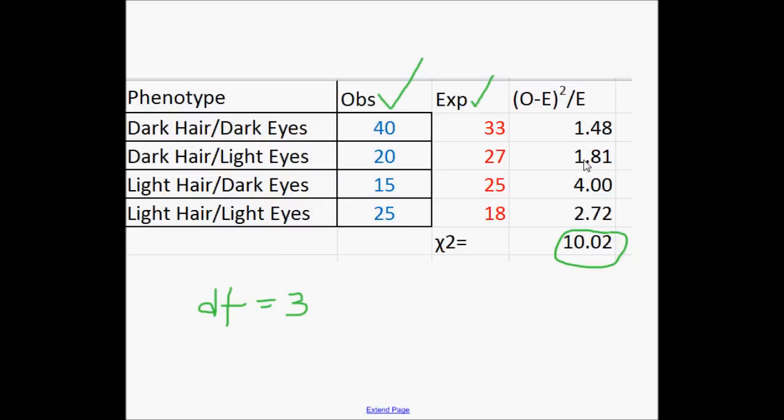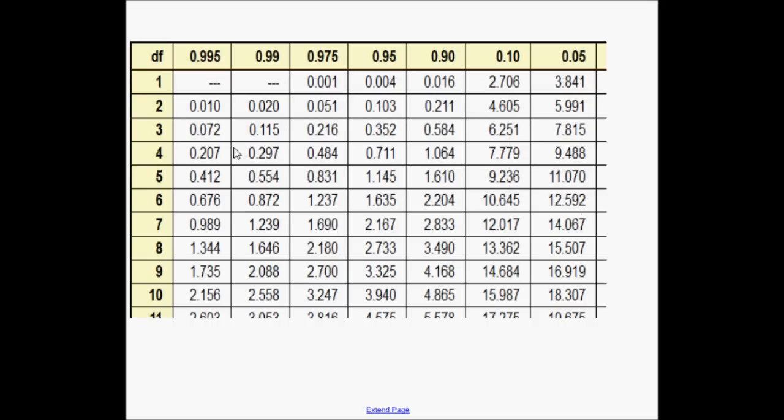That's a pretty high number actually. And you can see that some of them are quite different - 40 to 33, 15 to 25. These are big, big differences. So my observed data and my expected doesn't match up. 10.02 is my chi-square number. Let's go ahead and look at it. The degree of freedom was 3. 10 is going to be way off here somewhere. This is 5%. So the likelihood of my hypothesis being true is less than 5%. We reject the hypothesis.